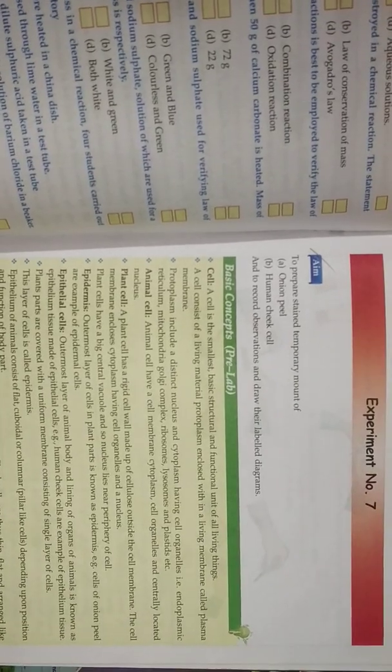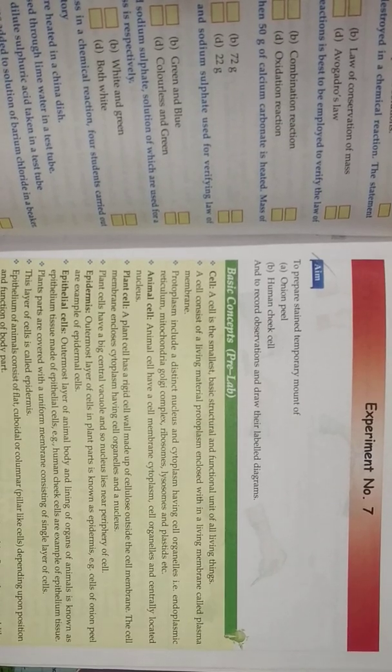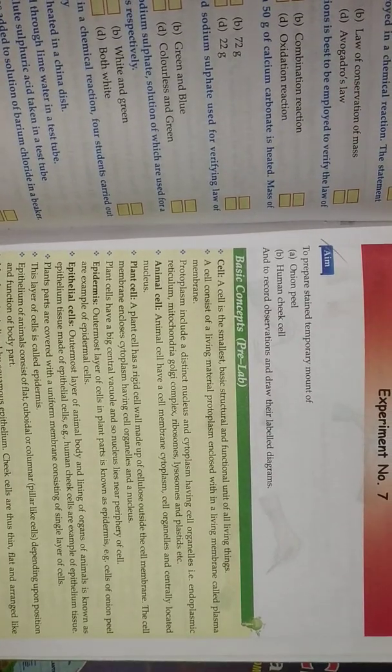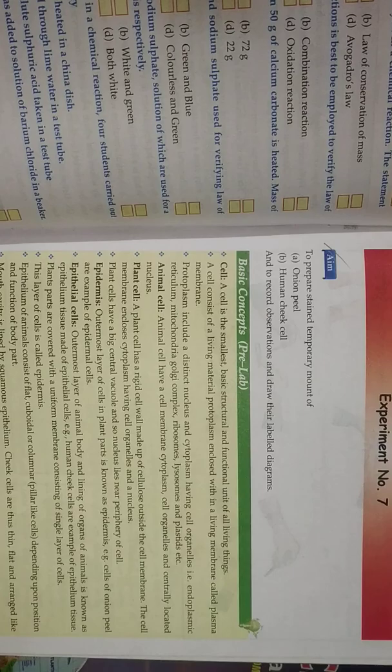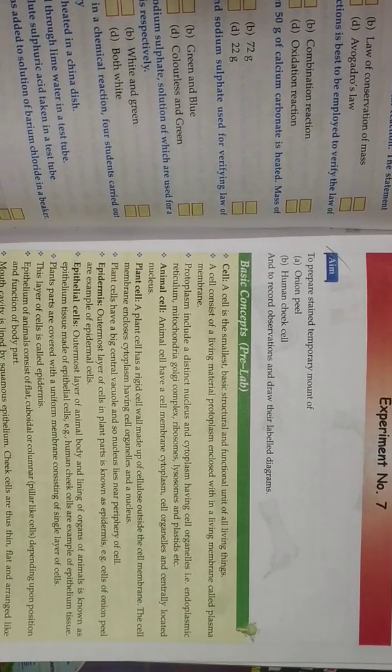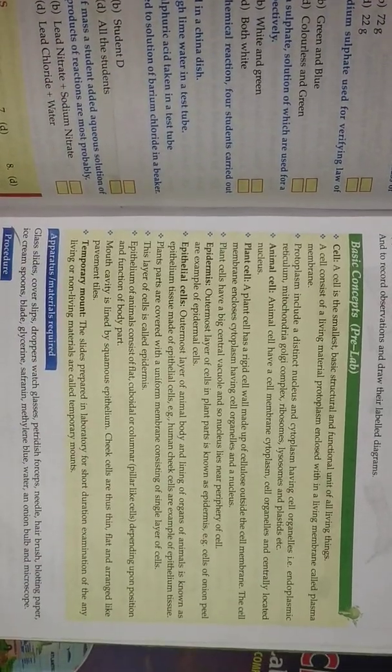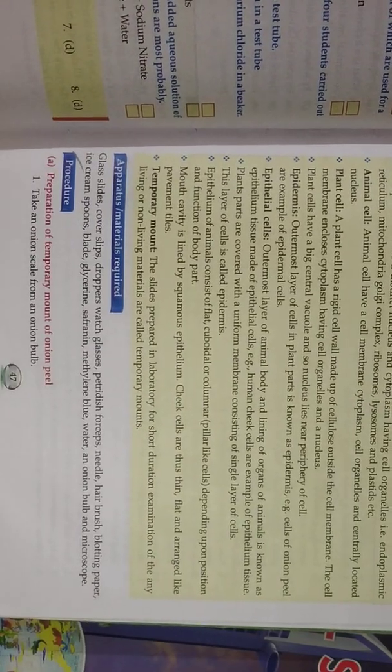So friends, we came with a new video on the biology class 9th practical, means lab manual. First is to prepare a temporary mount of onion peel, human cheek cell, and to record observation and draw the labeled diagram: basic plant cell, animal cell, and then epidermis epithelial cell. You see, material required.